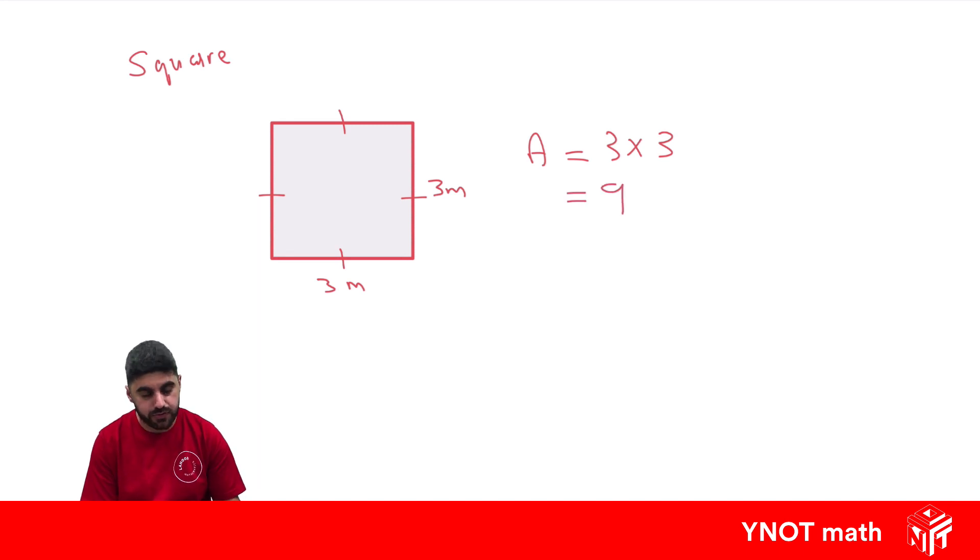And the units we use for area, or whatever units we have, meters squared. We can generalize this by saying area is its side length squared, whatever it happens to be.